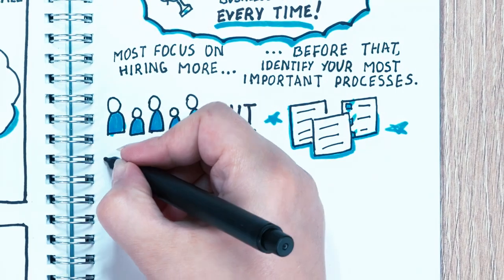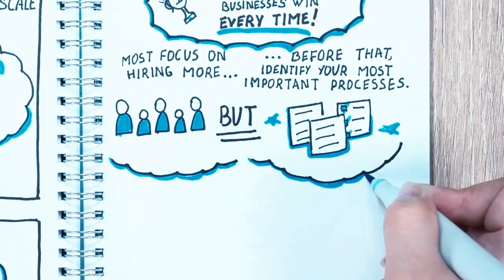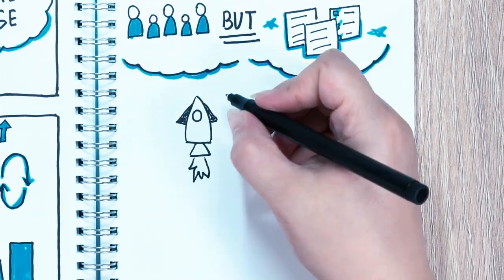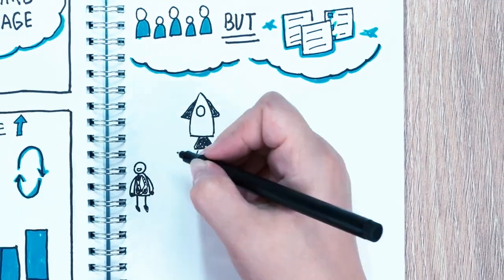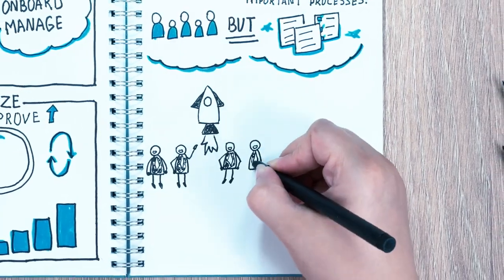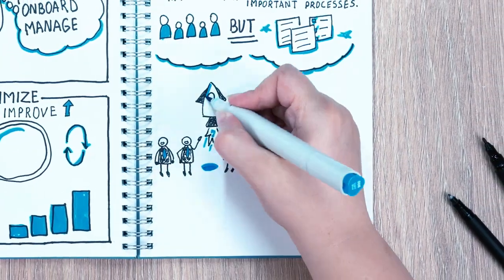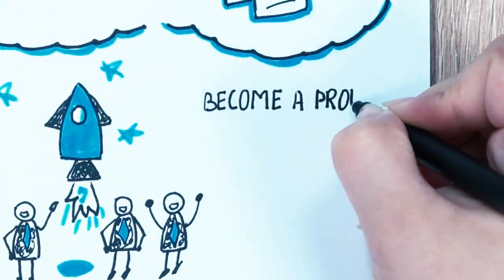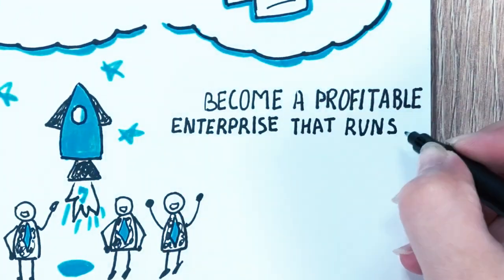By identifying critical systems, assigning team members to those systems, extracting them, organizing them, integrating them, identifying your scale systems, and optimizing them, business owners can transform their companies from being heavily dependent on them to becoming a profitable enterprise that runs like a Swiss watch.